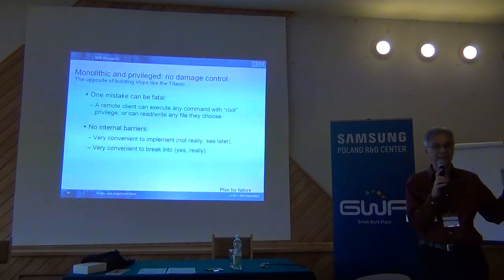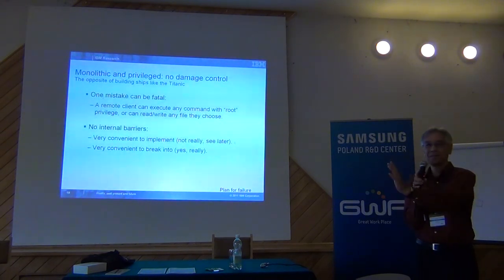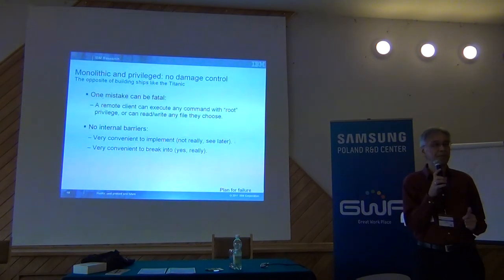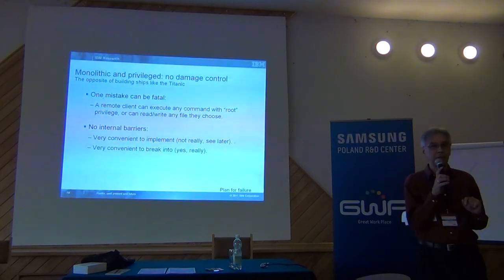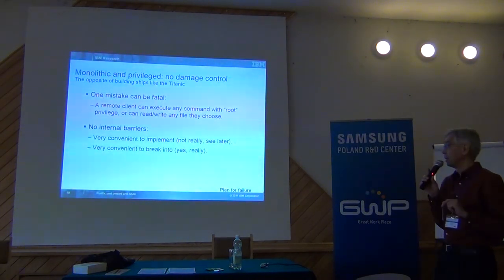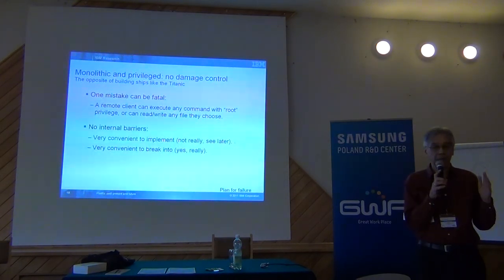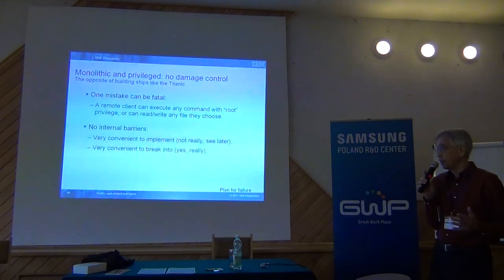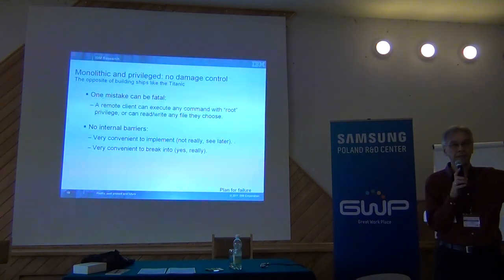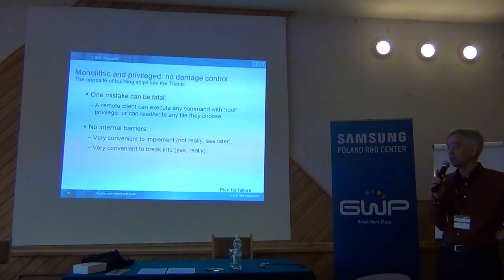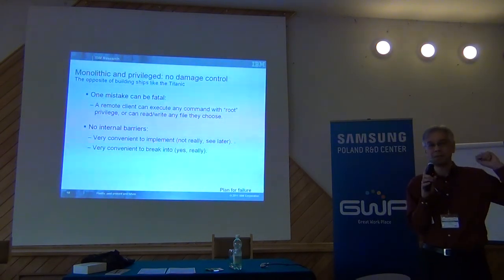The reason this can happen is that programs have no internal barriers. Think of the Titanic — a large ship with many compartments, designed so the ship would not sink easily. Small damage would not take down the system. On the other hand, a large monolithic system is easy to build initially, but once your system evolves and things need to be added, the monolithic structure makes it more difficult. And it's definitely easy to break into — only one vulnerability and you go root all the way through.